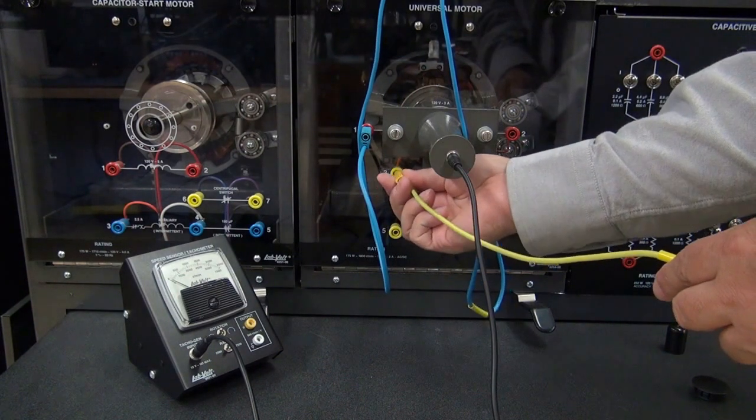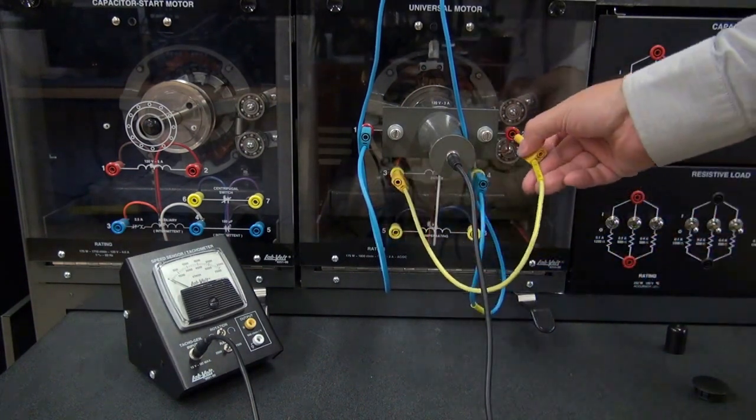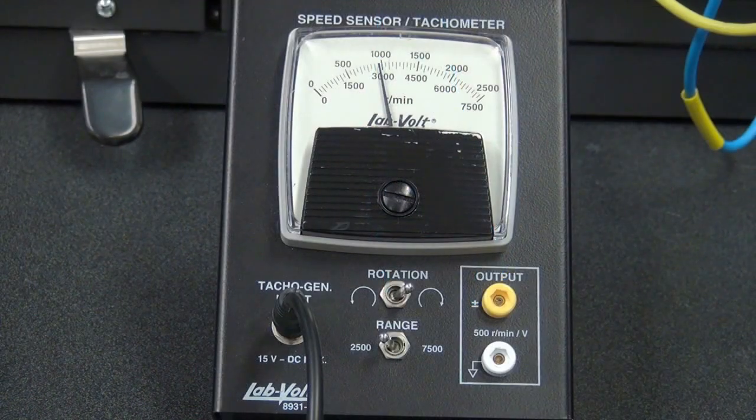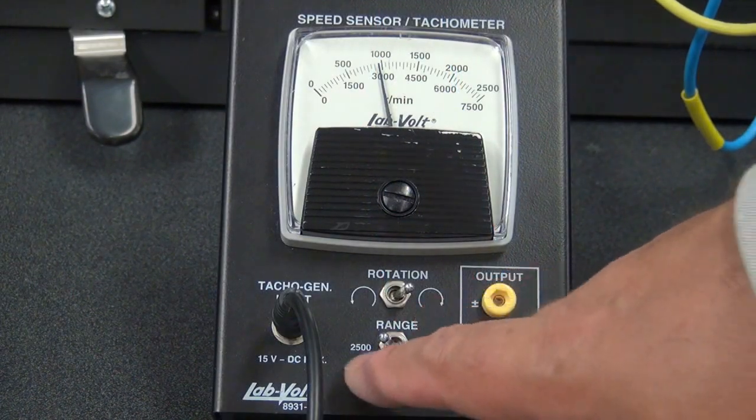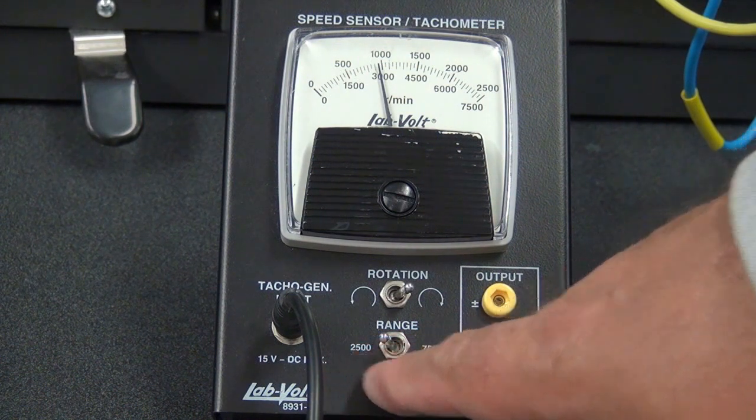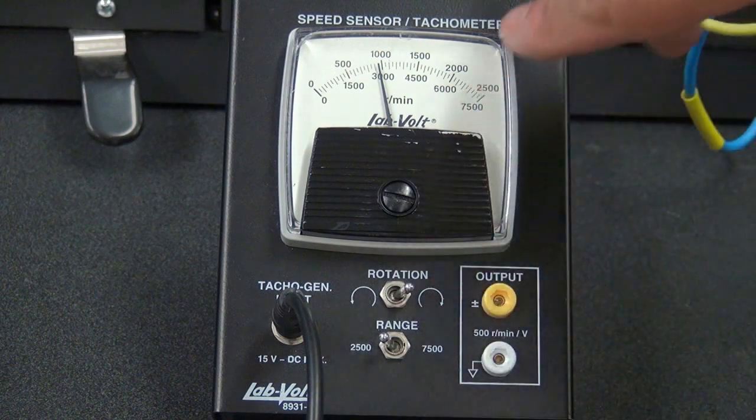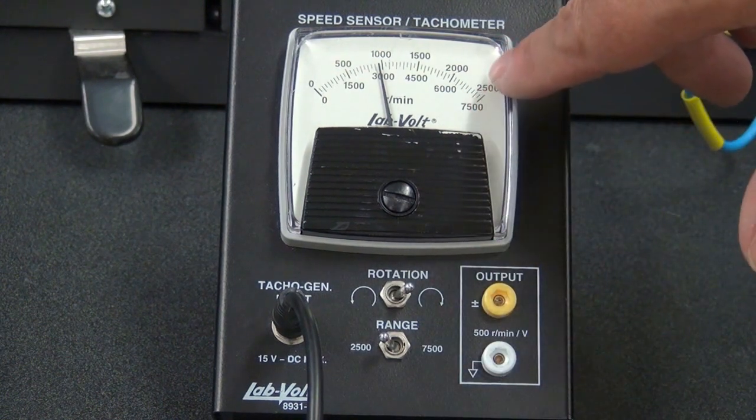And as soon as it starts to rotate, you will be able to read its speed on the meter. There are two ranges on the meter: one is up to 2500 rpm and the other is up to 7500 rpm. You read it according to the scale that you selected here.